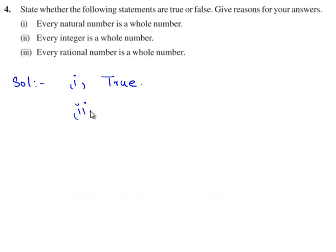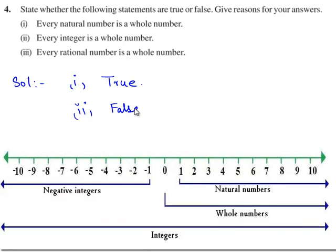Now let us consider the second statement. The second statement given is: every integer is a whole number. The statement is false because integers can also contain negative numbers. But the set of whole numbers contains only positive numbers. Hence, every integer cannot be a whole number.